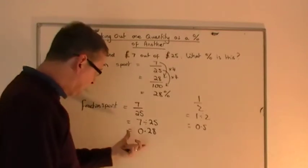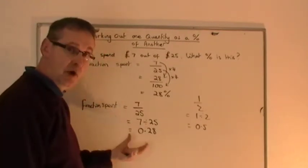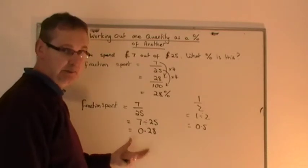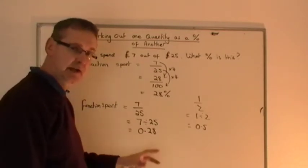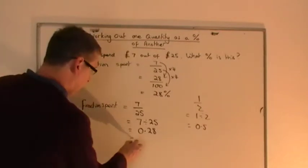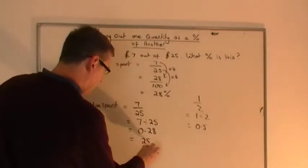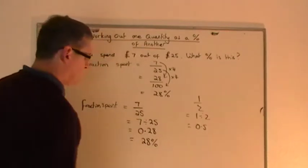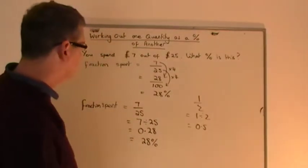Either by looking at the decimal and just spotting the pattern that's going on there, or by formally learning the method that we talked about way back in year 10, that you just have to multiply it by 100 to turn it into a percentage. Either way, it doesn't really matter. You end up with the figure 28%. 0.28 is 28%.